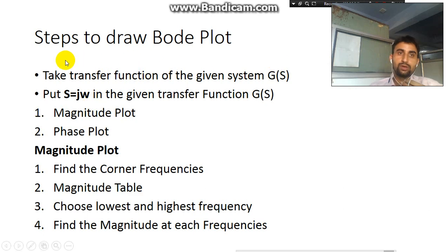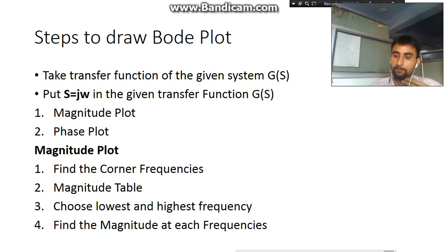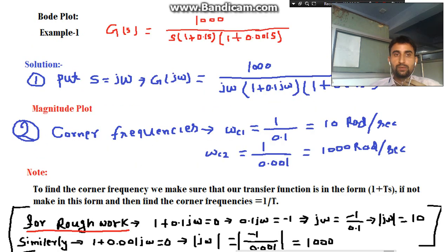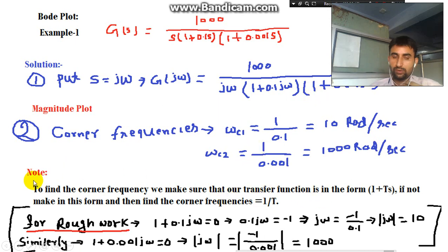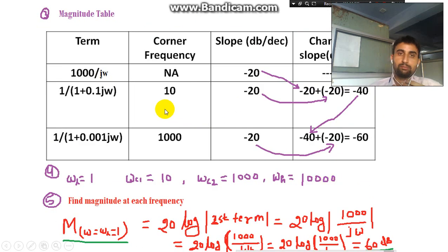Let's go through briefly how to draw the Bode plot. First step: take the transfer function and substitute s equal to j-omega in G(s). Then start with the magnitude plot. The first step to find the magnitude plot is to find the corner frequencies, then build the magnitude table, choose the lowest and highest frequency, and find the magnitude at each frequency. The corner frequencies are found from the time constants: omega_C1 equals 1 divided by 10, giving 10 radians per second, and omega_C2 equals 1 divided by 0.01.